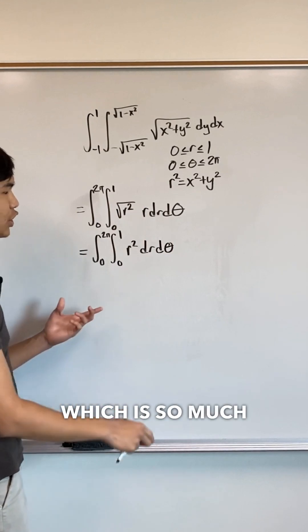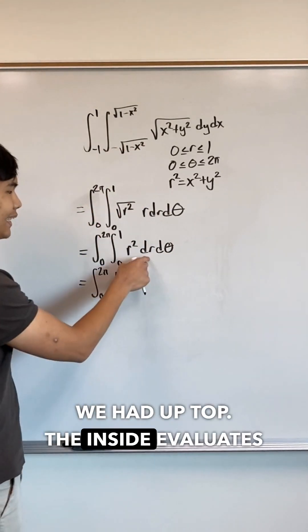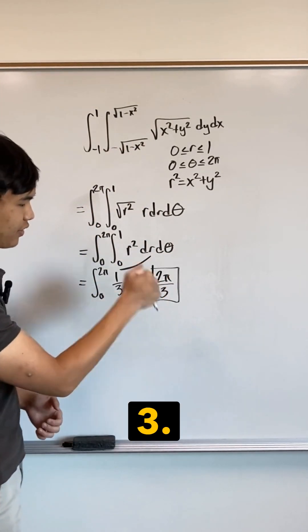And this simplifies to this, which is so much nicer than what we had up top. The inside evaluates to 1 third, and the whole integral evaluates to 2 pi over 3.